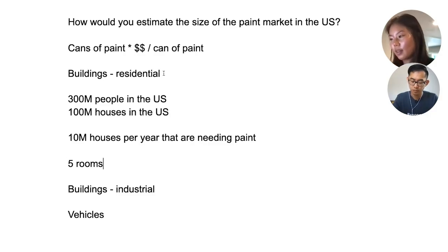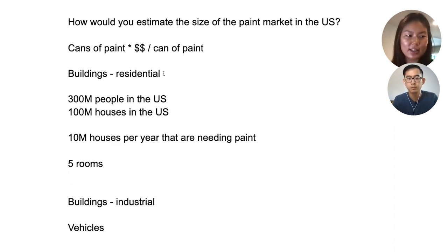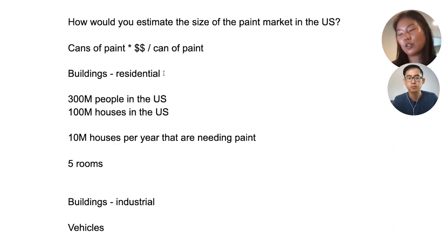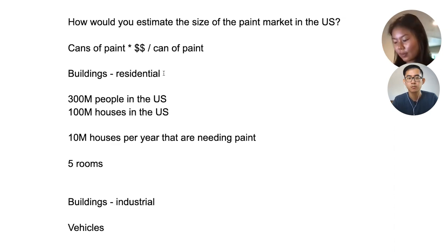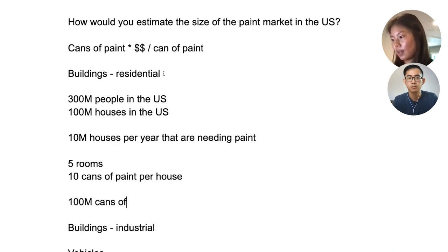So let's say 10 million houses per year need paint. For the average-sized house — a bathroom, two bedrooms, a living room, and a kitchen — that's five rooms. Based on experience, you can basically use one can of paint per reasonably sized room. Assuming we're also painting the outside of the house, that would double the surface area, so about 10 cans of paint per house. Multiplying that out, that's 100 million cans of paint residentially.